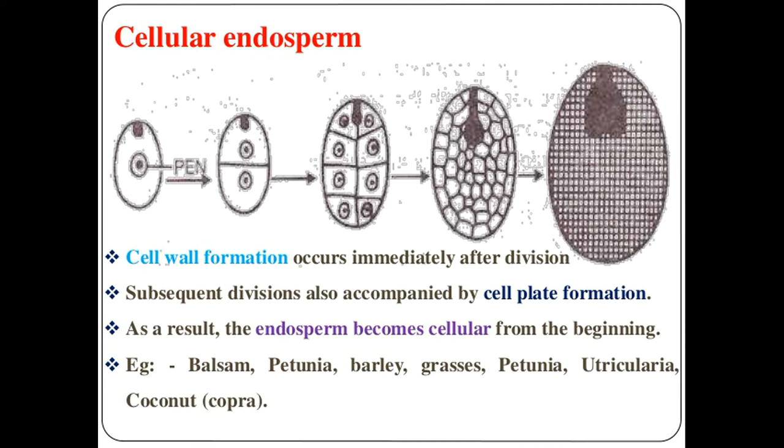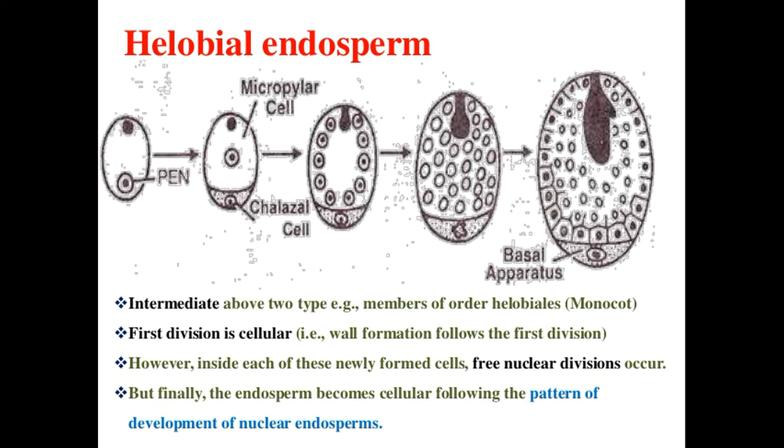The heliobial type is an intermediate type between the nuclear and the cellular type. The first division is accompanied by cytokinesis but the subsequent ones are free nuclei. It is most common in monocot plants. During the formation of the heliobial type of endosperm, there is a mixture of the cellular type and the nuclear type.